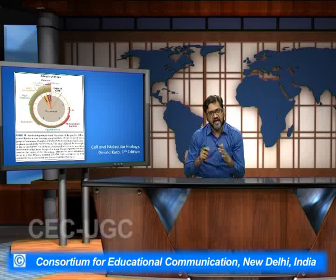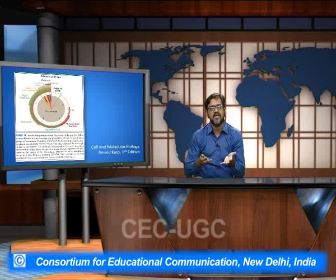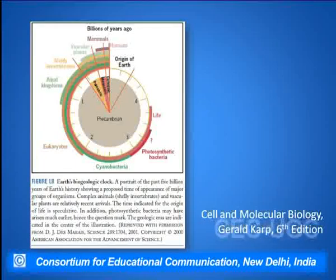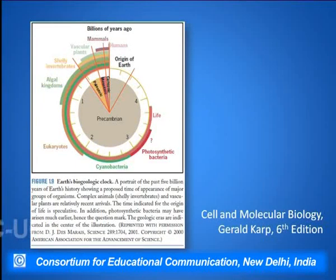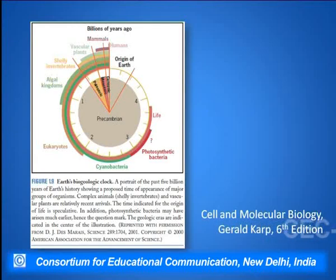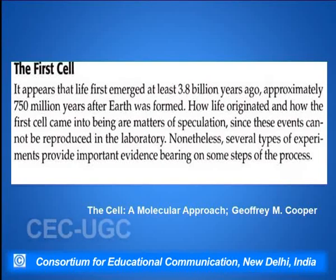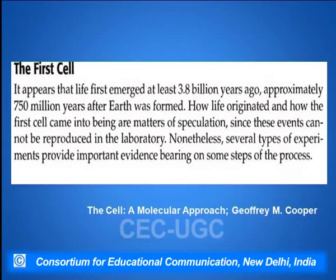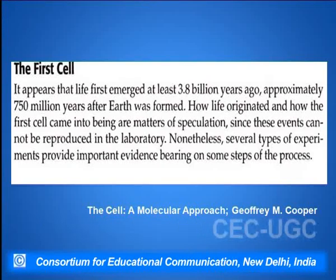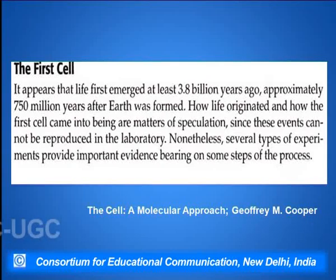If we see the timeline, it is showing how exactly in the various eras — Paleozoic, Cenozoic — the various forms of life and structures, eukaryotes, prokaryotes, and algal forms developed over a period of time. It is said that the first cell emerged at least 3.8 billion years ago, approximately 750 million years after the Earth was formed.